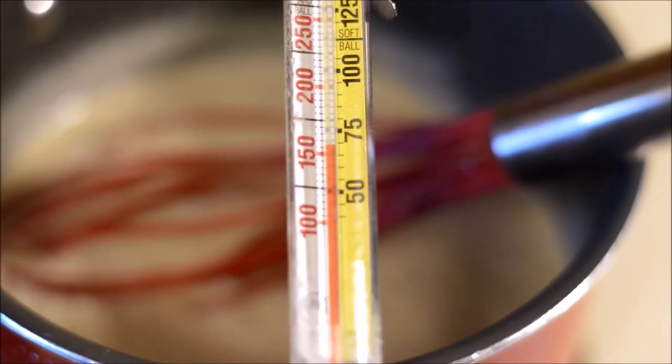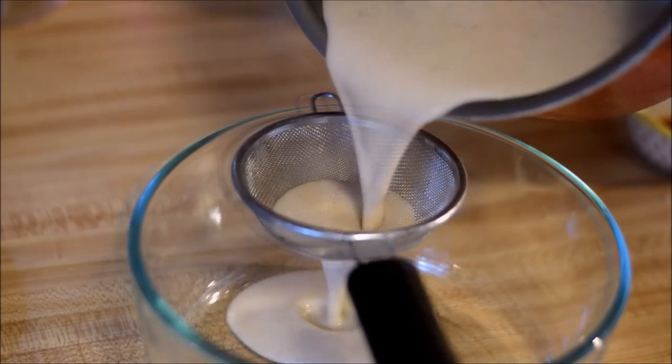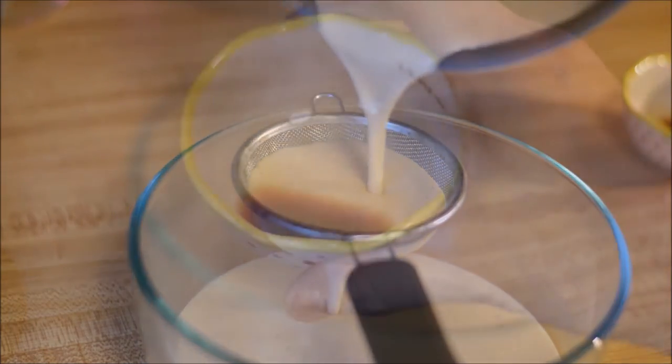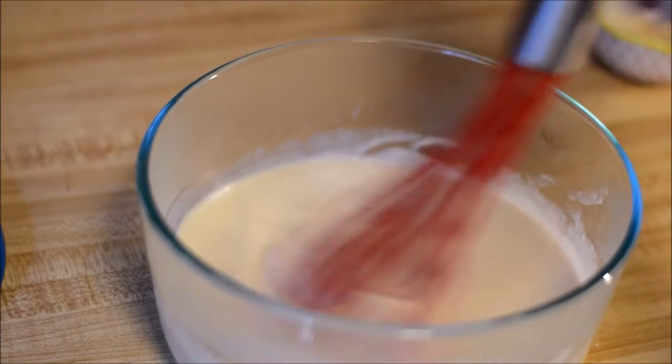Now that the eggnog has reached 160 degrees, pour it through a sieve to strain out any clumps of nutmeg or cinnamon. Add in the vanilla and whisk again. This is also the point that you can add bourbon or rum if you like.